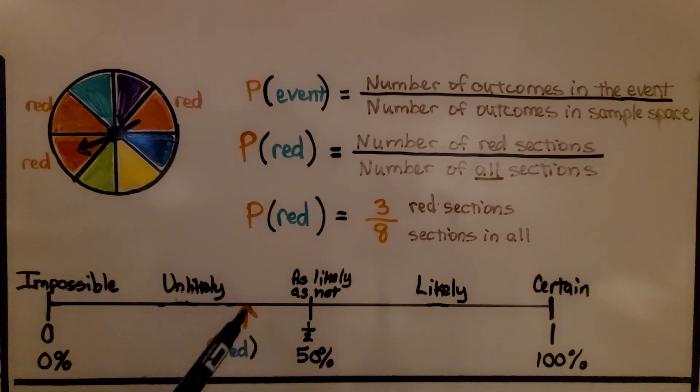The probability of spinning and getting red is 3/8. On the number line, it would be about right here. It would be close to half. 3/8 is very close to 4/8, which is a half, isn't it?